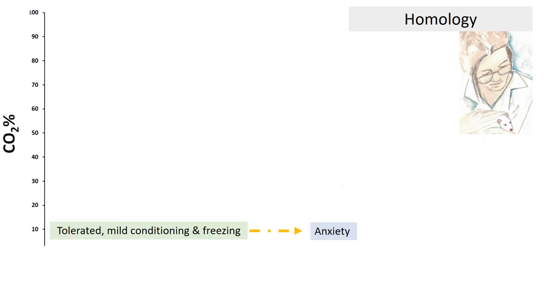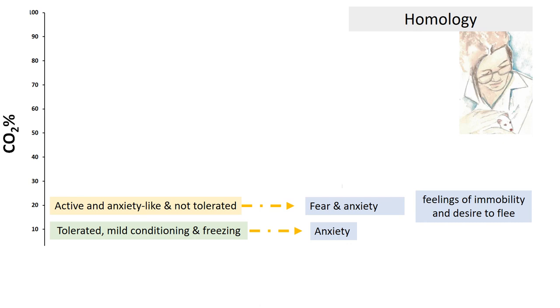When we compare the rat experience with human feelings of emotions, we can see that at 10% CO2, concentrations that are tolerated and induce mild conditioning and freezing, humans experience anxiety. At 20% CO2, concentrations that are not tolerated by rats and that induce active and anxiety-like behaviors, induce fear and anxiety in humans, and feelings of immobility and desire to flee.